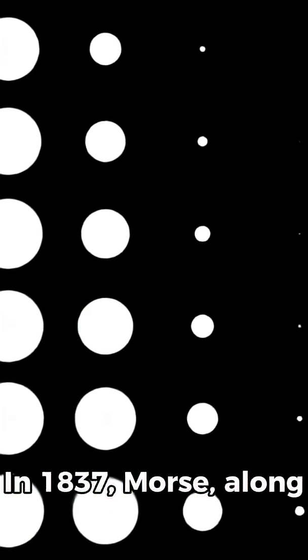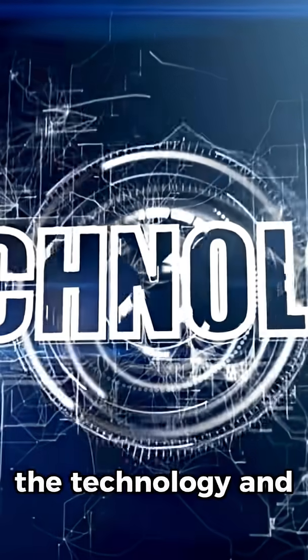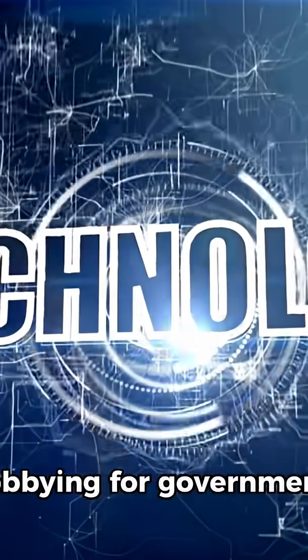In 1837, Morse, along with his collaborator Alfred Vail, created a working prototype that used dots and dashes, what became known as Morse code. After years of refining the technology and lobbying for government support,